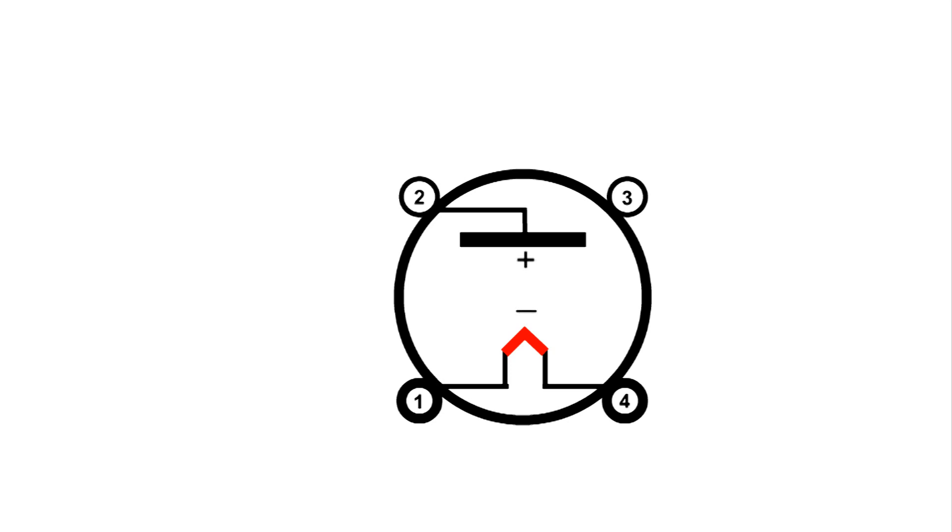However, when he reversed that, like this, they found that electrons would flow from the filament to the plate. And this is when they discovered that electrons actually flow from negative to positive.